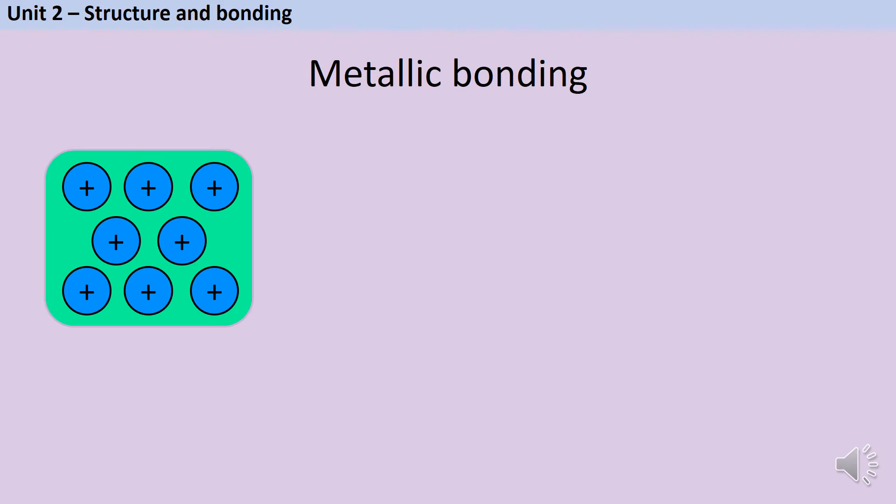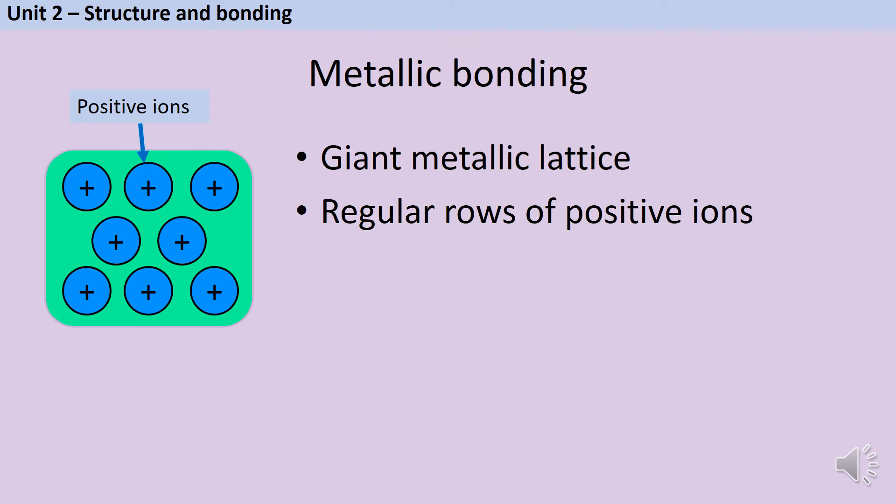If we look at a sample of a pure metal at an atomic level we see that it has a giant structure, which means the structure contains thousands of particles, forming something called a giant metallic lattice. This lattice is mainly made of positive ions, and the reason that they're positive ions is because each metal atom has lost its outer shell electrons which are negative, and so the ion that is left behind is positive and these form regular rows.